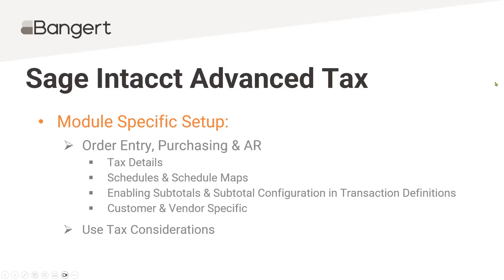After that, we're going to get into module-specific setup. From that point on, we're going to have specific setups in order entry versus purchasing. Tax details is where your tax percentages are stored. If you have the same county on both the purchasing and order entry side, we're actually going to set up two tax details — one called 'order entry county' and one called 'purchasing county' — we'll need separate specific setups for that.